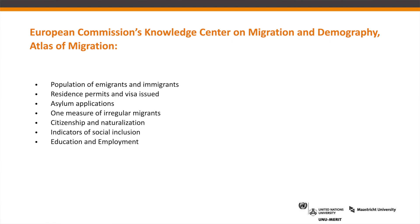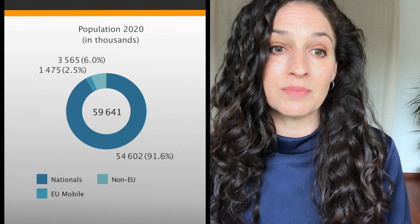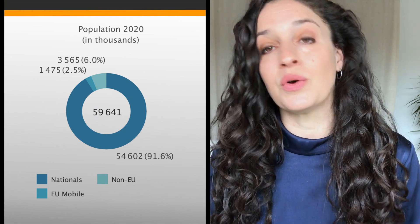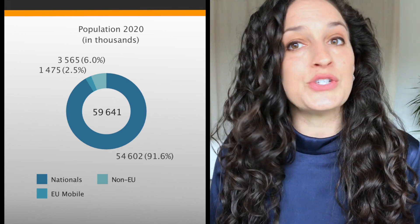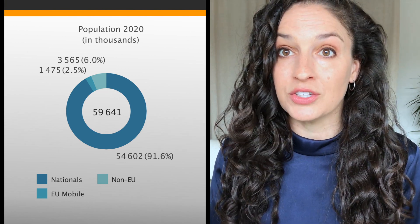I'm going to cover issues of population, looking at immigrants in Italy. I'll look at residence permits and visas issued, asylum applications, and even one indicator of irregular migration. I'll also look at citizenship and naturalization rates, as well as some indicators of social inclusion, education, and employment outcomes. So Italy has around 60 million people, at least as of 2020. Of those, 6% were non-European immigrants and 2.5% were European immigrants, meaning around 8.5% of the Italian population were immigrants.